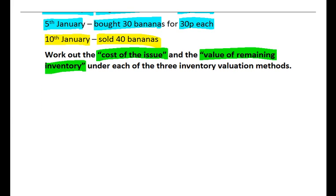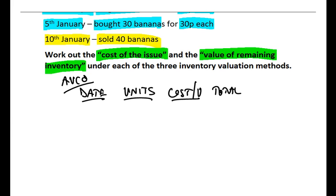Well we're going to do the calculations under AVCO or average cost, so we can set up a little table. And if you've already worked through FIFO and LIFO this table will be quite familiar. So I'm going to have a column for the date of each transaction, a column where I can record the number of units either being received or being issued, a column for the cost per unit of the bananas, and then a column for the total cost of each transaction.